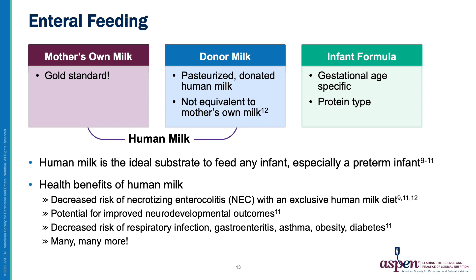Infant formulas are also options, and there are many varieties available. Some characteristics that distinguish them are the gestational age of the infant they are designed for, as well as the protein type. Human milk — including mother's own milk and donor milk — is the ideal option when available. Health benefits include decreased risk of necrotizing enterocolitis (NEC) with an exclusive human milk diet, potential for improved neurodevelopmental outcomes, decreased risk of respiratory infections, gastroenteritis, asthma, obesity, diabetes, and many more.